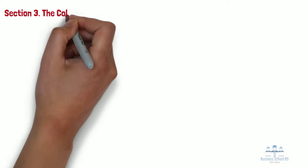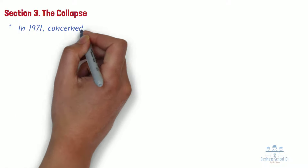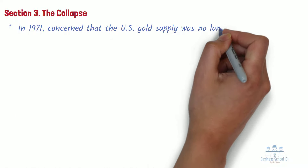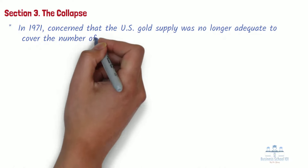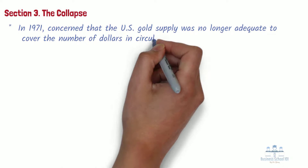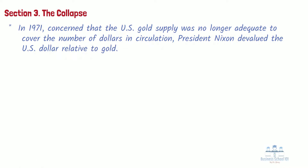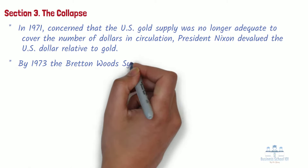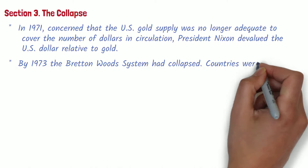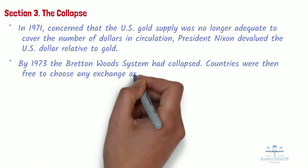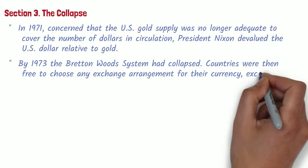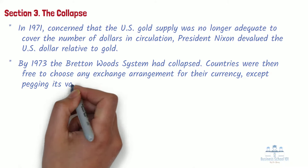Section 3: The Collapse. In 1971, concerned that the U.S. gold supply was no longer adequate to cover the number of dollars in circulation, President Nixon devalued the U.S. dollar relative to gold. After a run on gold reserves, he declared a temporary suspension of the dollar's convertibility into gold. By 1973, the Bretton Woods system had collapsed. Countries were then free to choose any exchange arrangement for their currency, except pegging its value to the price of gold.